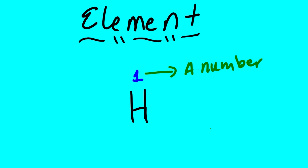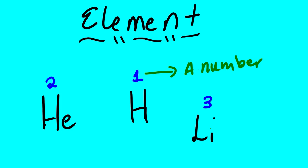The atomic number tells us a lot of things. The atomic number represents the number of electrons and the number of protons this element has. For example, hydrogen has an atomic number of one, so hydrogen has one electron, one proton, and is element number one. Helium is element number two — two protons, two electrons. Lithium is element number three — three electrons, three protons.